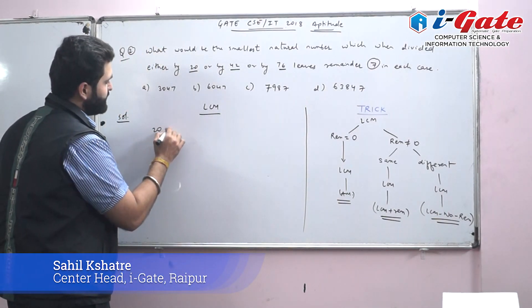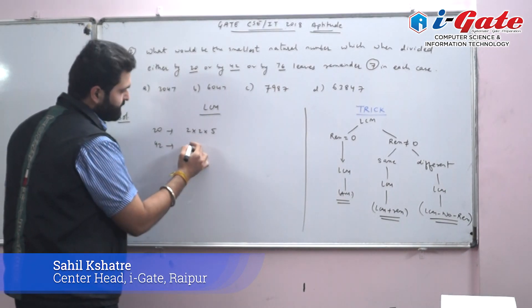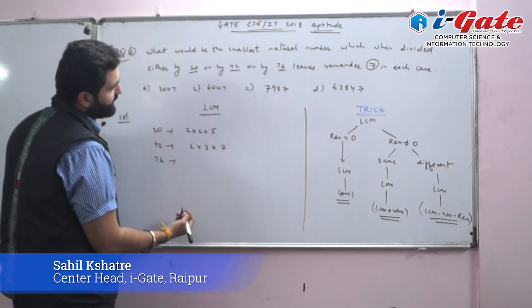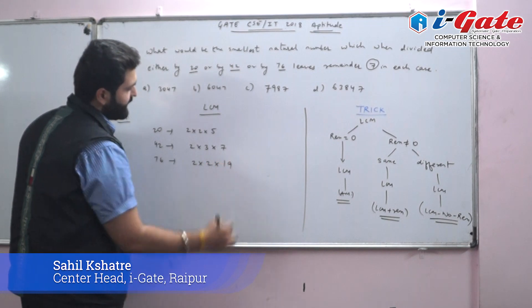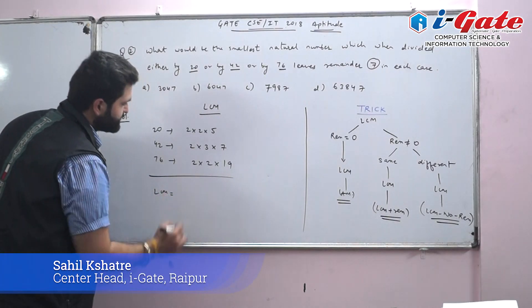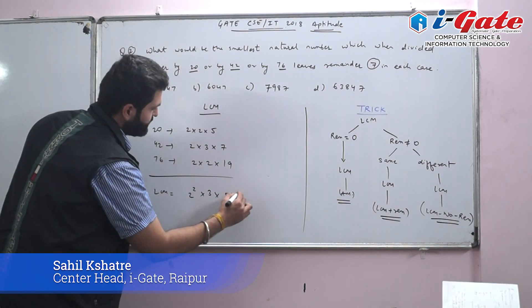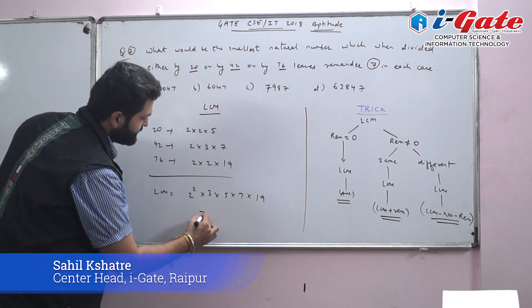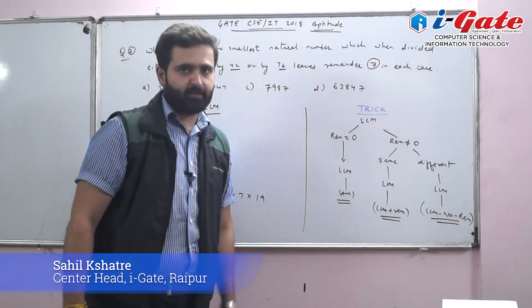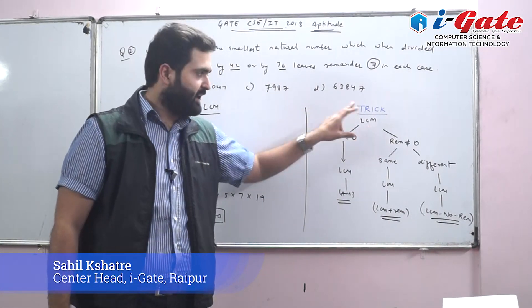Factorizing: 20 = 2² × 5, 42 = 2 × 3 × 7, and 76 = 2² × 19. The LCM is 2² × 5 × 3 × 7 × 19, which gives 7980.